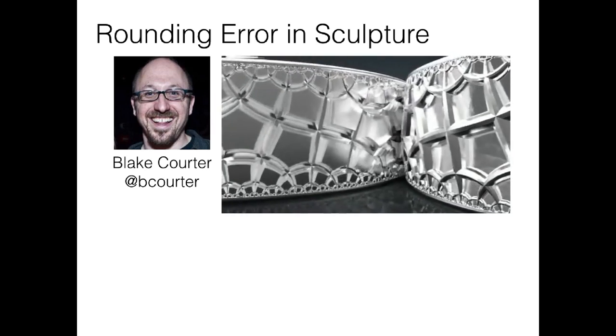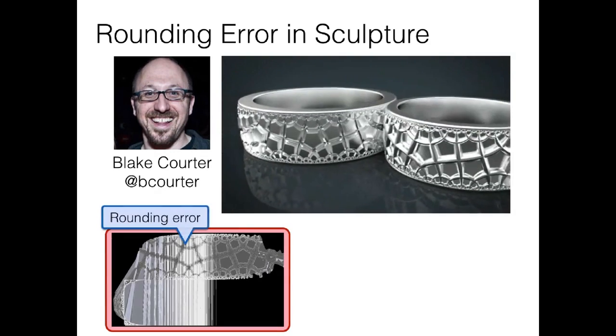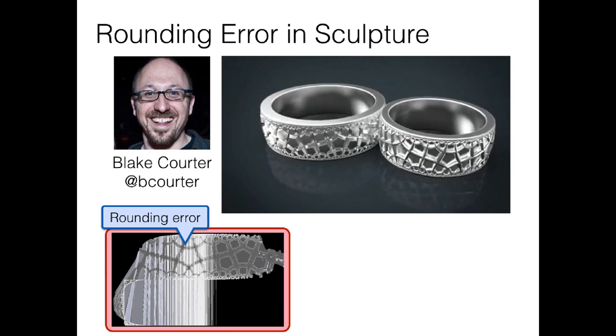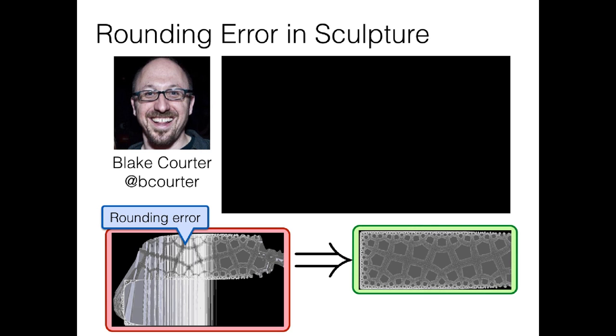His first renders ended up looking something like this, with the left-hand side of the image covered in strange noise and banding. After some digging, it turned out that this was due to rounding error. When Blake replaced his formula with one generated by Herbie, this noise and banding disappeared. And in fact, he got this much more accurate result, and eventually the design on his rings.